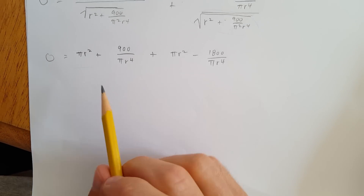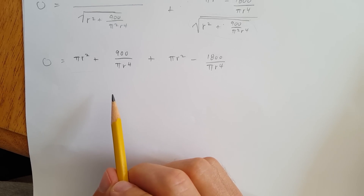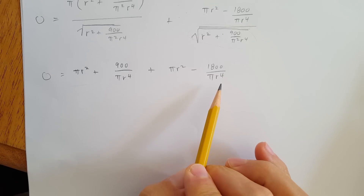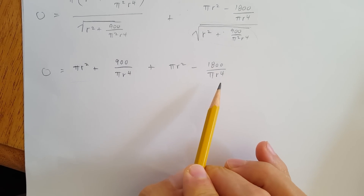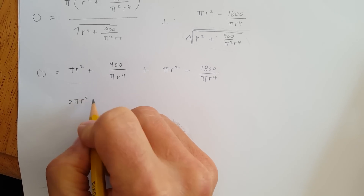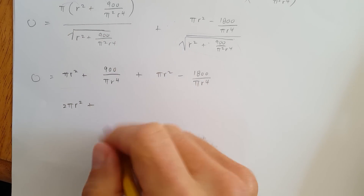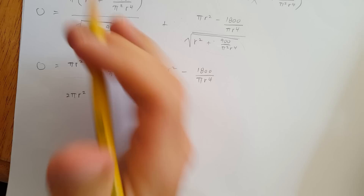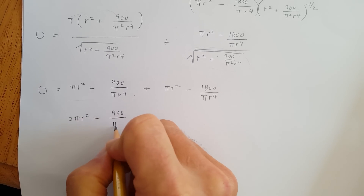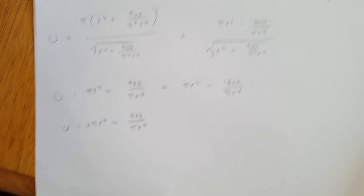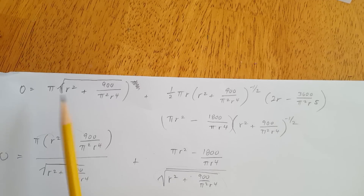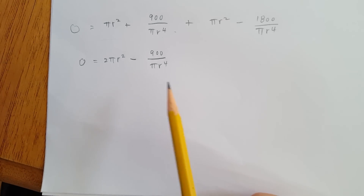So now we have to deal with this top part and combine like terms. These two are like terms, and these two also have the same denominator — they're both one over r to the fourth, which makes them like terms. So we can deal with this: two pi r squared, and now we just add these. We have 1800 minus 900, which is going to be minus 900 pi r to the fourth, equals zero.